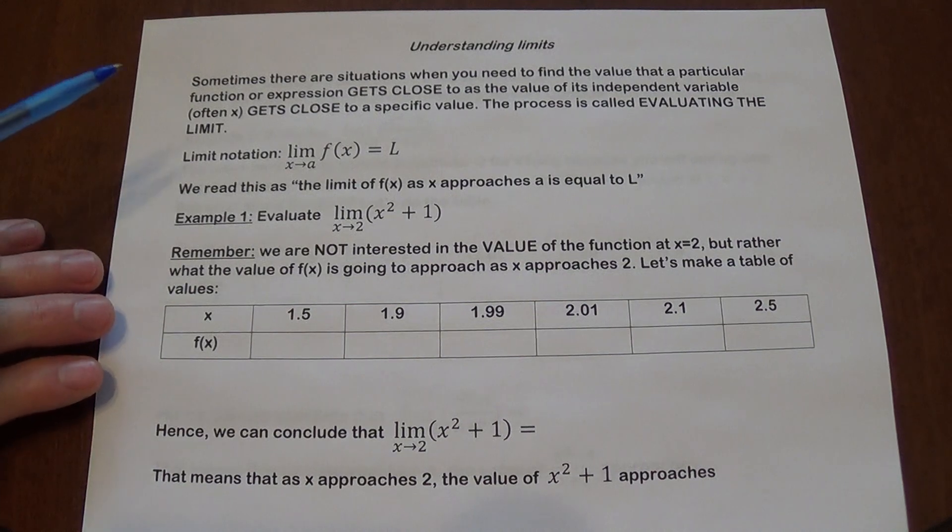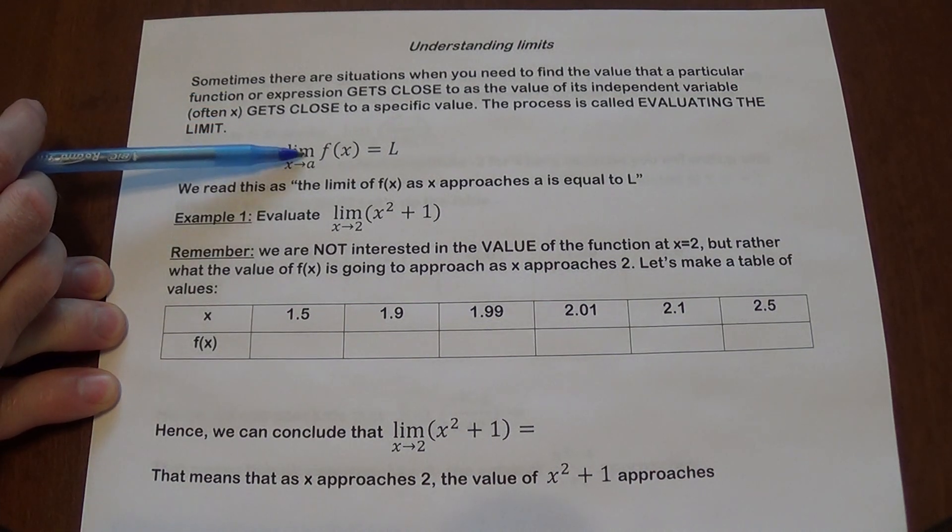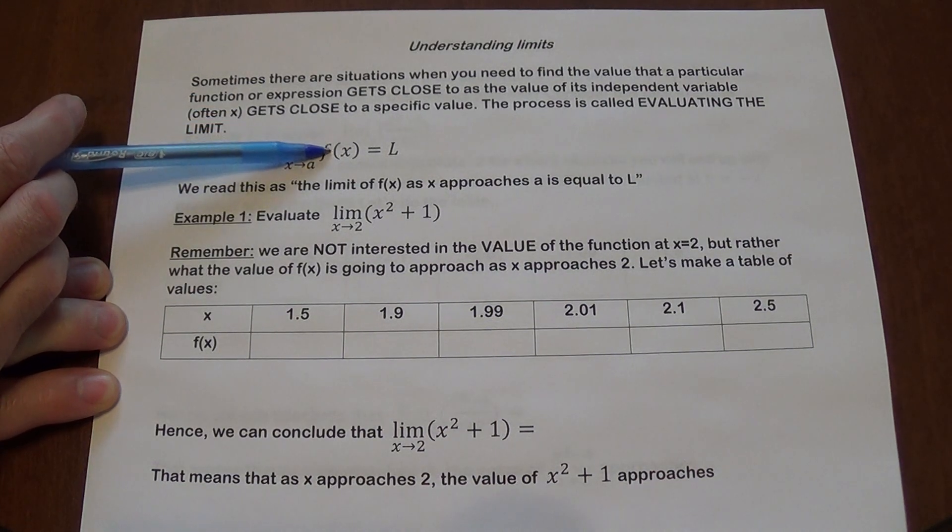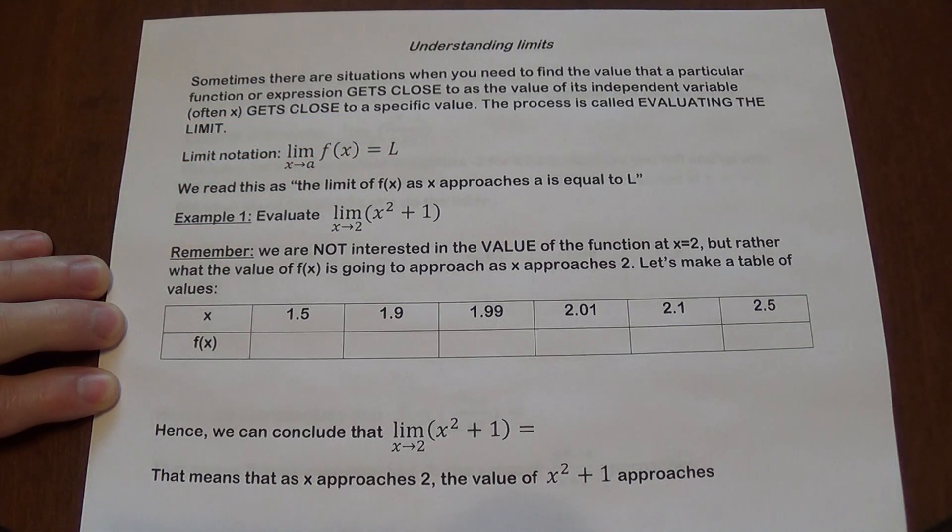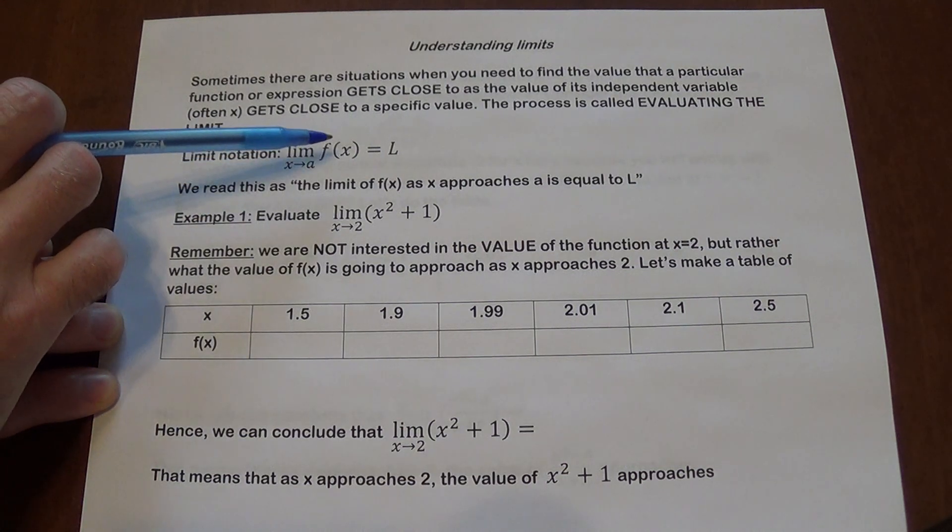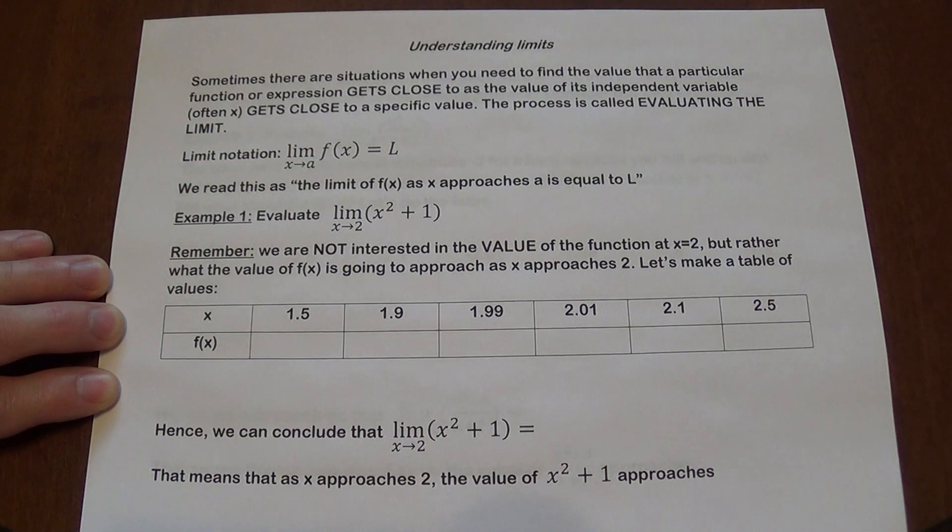So here's the limit notation. We write it as LIM of f(x) or some kind of an expression here. On the bottom it's going to have x approaches a and it's going to equal some value. And we read that as the limit of f(x) as x approaches a is equal to L.